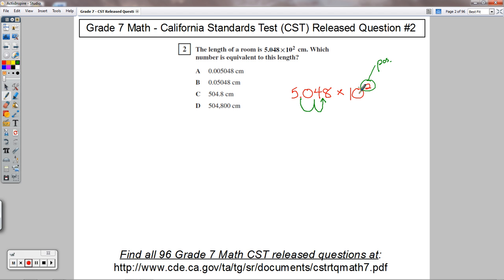So I'm moving the decimal. The power tells me the number of places to move it. If it said negative two, I would make this a smaller number and move the decimal two spots the other way. But it says positive two, so I'm going to make it a bigger number and move it that way.